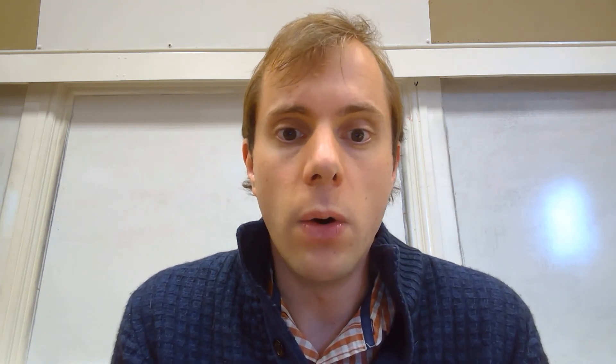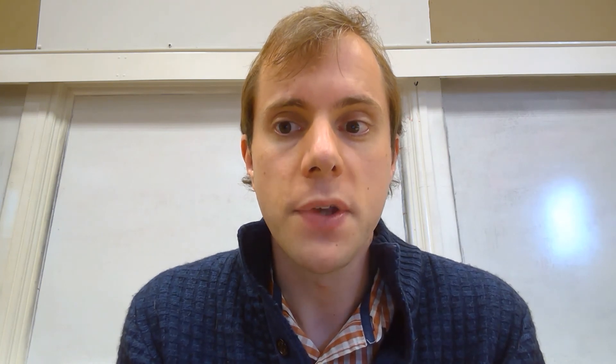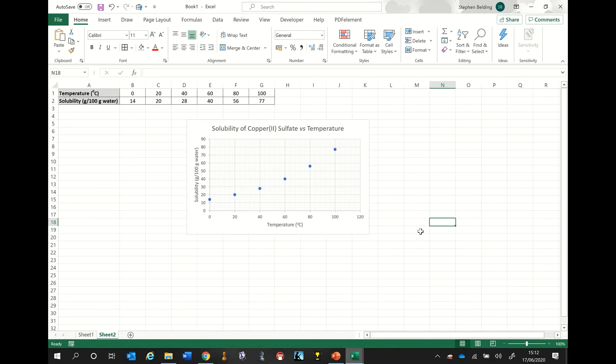Having done this, there could be various things that you want to do depending on what you're using the graph for. You might decide that you want a slightly different type of graph, you might decide that you want to add a trend line, or you might want to print out a full page copy of your graph for a report. So I'm going to show you how to do this now. Here is the graph that we produced in the previous part of the video — I'm going to show you how to add a trend line.